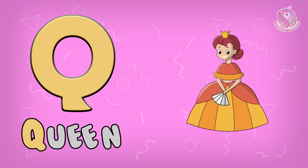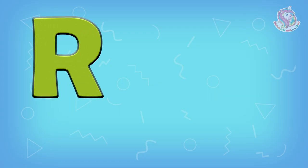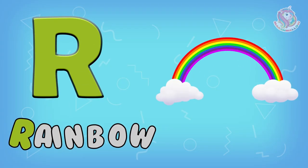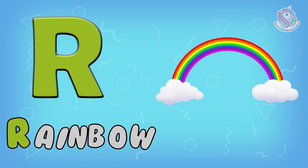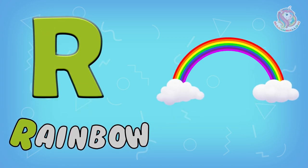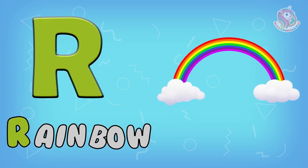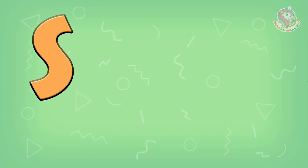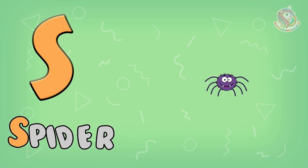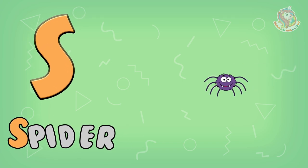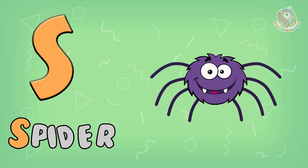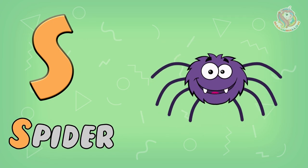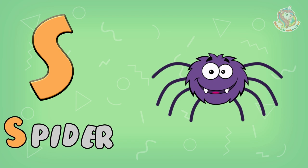R is for Rainbow. R, R, Rainbow. R, R, Rainbow. S is for Spider. S, S, Spider. S, Spider.